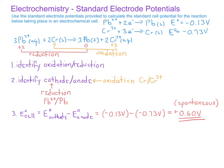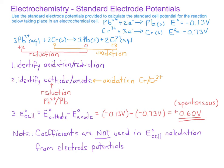There's one other important realization to make here. If you look at the balanced equation, we have 3 moles of lead ions and 2 moles of chromium metal on the reactant side, and 3 moles of lead metal and 2 moles of chromium ions on the product side. However, when calculating the standard cell potential, we did not take into account any of the coefficients in the balanced chemical equation. It's important to realize that the coefficients of the half-reactions do not matter.